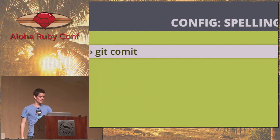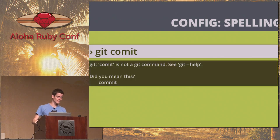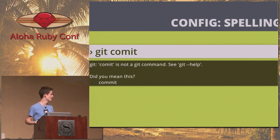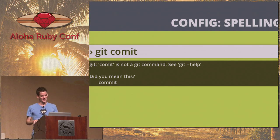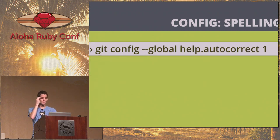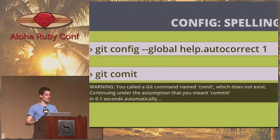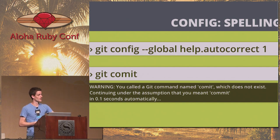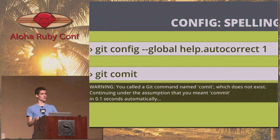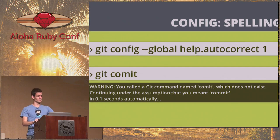I'm a horrible speller. If you type git commit wrong, git says that's not a command — did you mean commit? And doesn't do anything. If you do git config --global help.autocorrect 1, and then you type git commit wrong again, it will just say, that doesn't exist, I'm going to assume you mean commit — deal with it if you didn't — and just do it. If you want to live dangerously and trust your misspellings, just trust git.